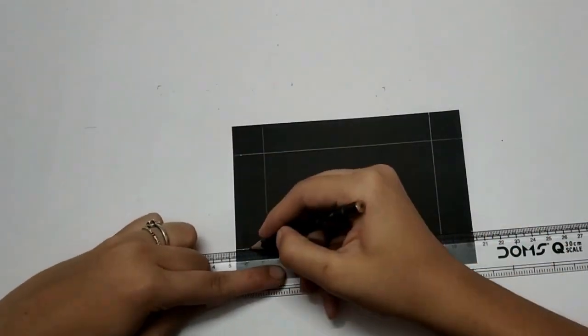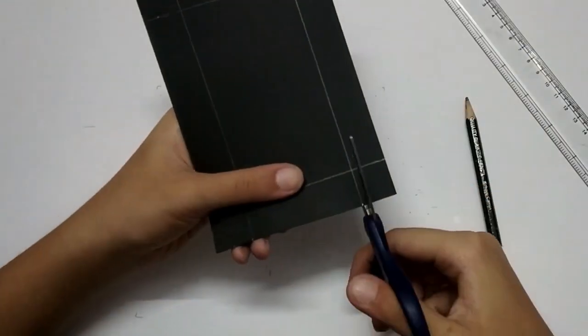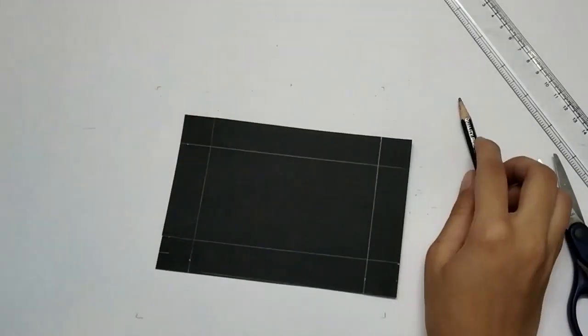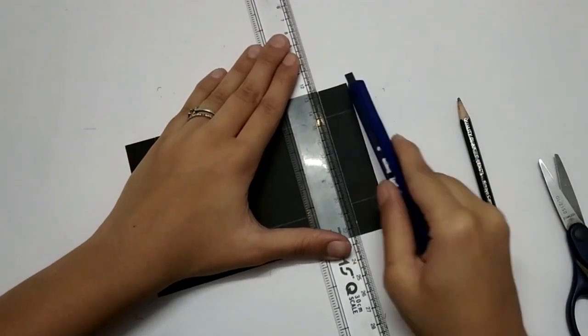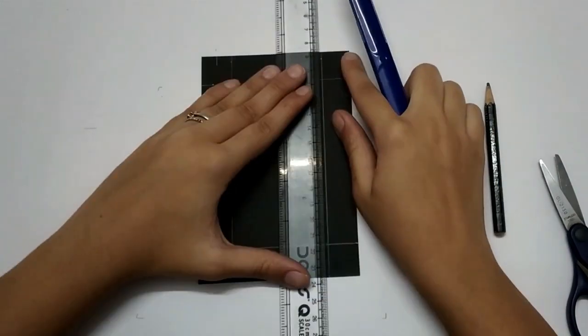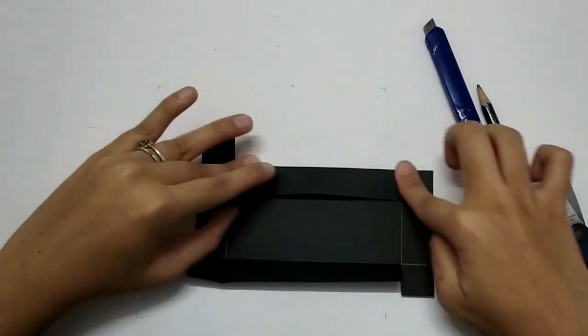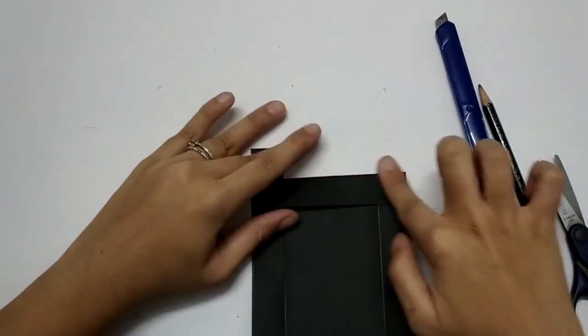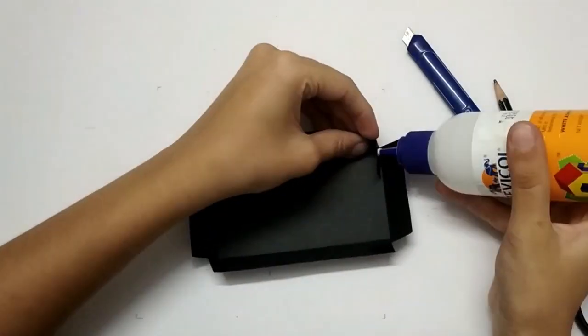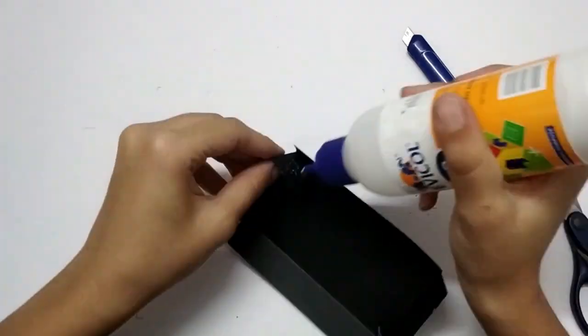Like this, now cut it. Again, you don't have to cut it completely, just slightly to bend it easily. Fold it like this. Apply glue on edges and paste it.